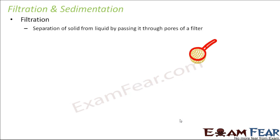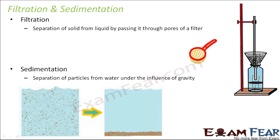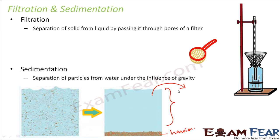Filtration happens by passing sewage through the pores of a filter — this is a laboratory setup of a filter. In sedimentation, initially particles are suspended everywhere in the sewage, but after a period of time, the heavier particles settle down and you get a comparatively clear liquid above. This clear liquid is the final product of primary treatment and is then taken ahead for secondary treatment, where organic matter content is further reduced before disposal.